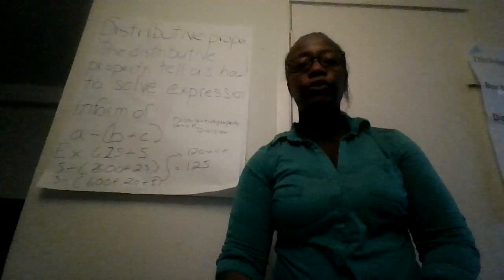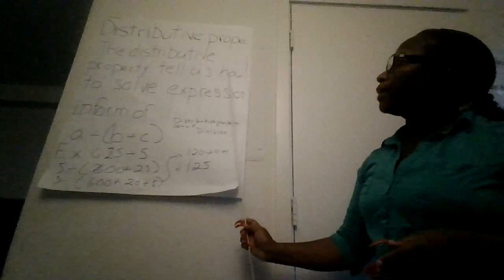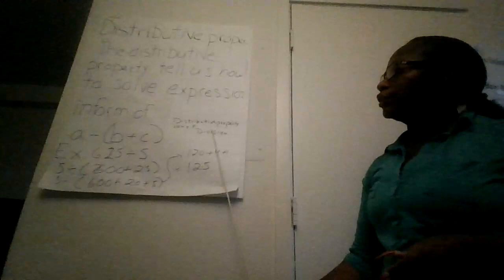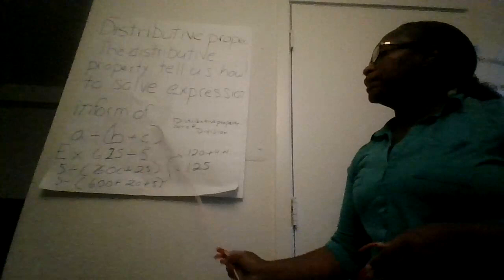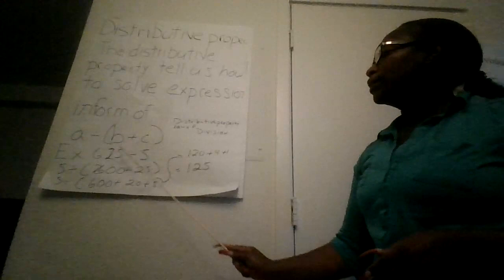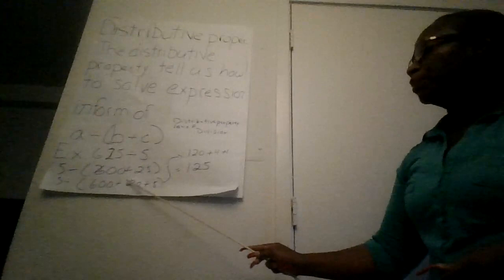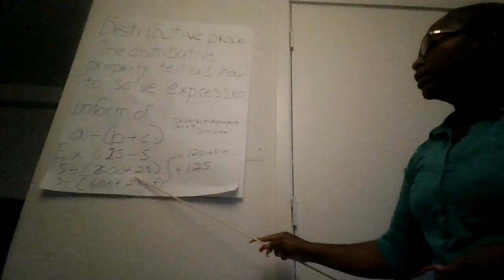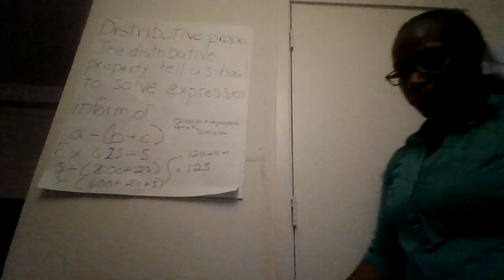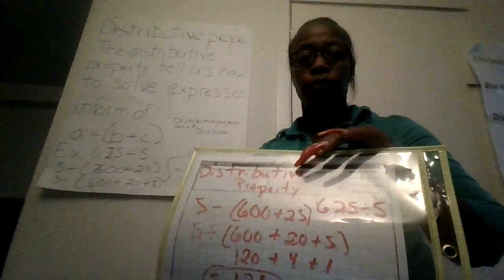Our next strategy is the distributive property. The distributive property shows how to solve expressions using the division law. For example, 625 divided by 5. You break it down into stages: 600 plus 25, then 600 plus 20 plus 5. Divide each separately by 5. The answer will be 120 plus 4 plus 1, for a total of 125. Here it is up close.